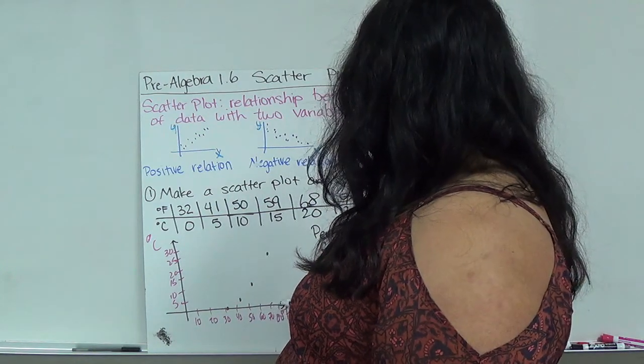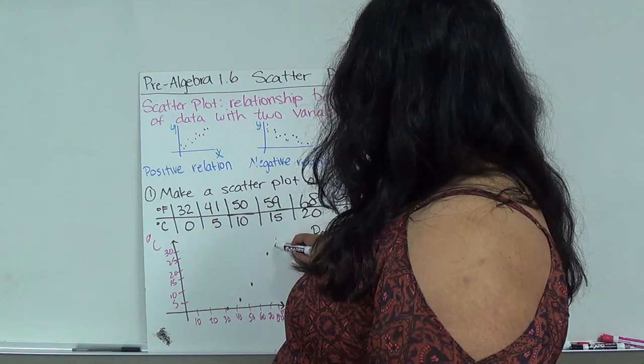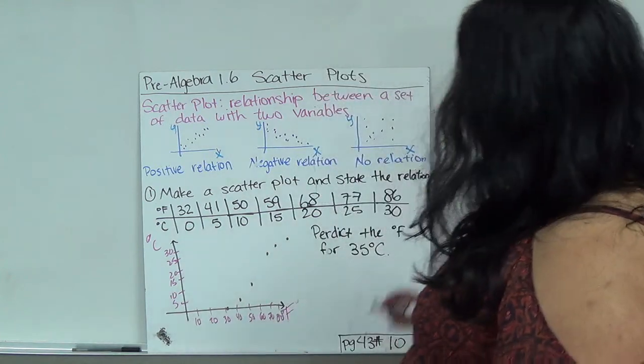The next one is 77 up 25 and the next one is 86 up 30. So not a perfect line.